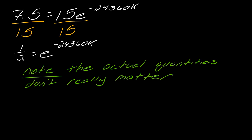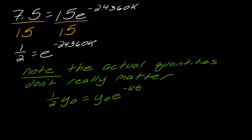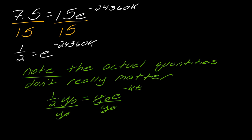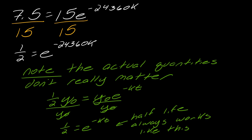So before we go further, I want to make a note here. This problem had quantities — 15, and then we figured out 7.5. But a lot of problems actually don't give you these numbers; they just talk about half-life and won't give you any other specifics, because the actual quantities don't really matter. So let's say they don't tell you the actual quantity — you have to leave your initial quantity as y-naught. It doesn't really matter what this quantity is; you know how to get to half this amount — you take half of y-naught. And if you divide both sides by y-naught, you're left with 1/2 equals e to the negative KT — literally the same result. This is kind of like a property of half-life.